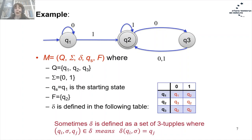From Q1 and input 0, we had a transition to Q1 — a self-loop. From Q1 and input 1, we moved to Q2. At state Q2, if the input was 0, we moved to Q3. At state Q2, if the input was 1, we stayed at Q2 — again a self-loop. For the last state Q3, on input 0 or 1, we moved to state Q2. Since for each state and each input letter we had only one uniquely defined state, our automaton was a deterministic finite automaton.